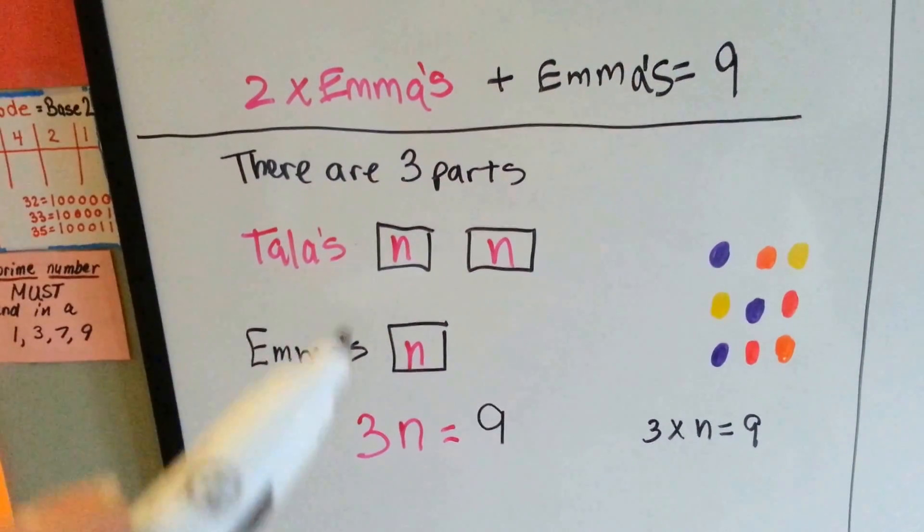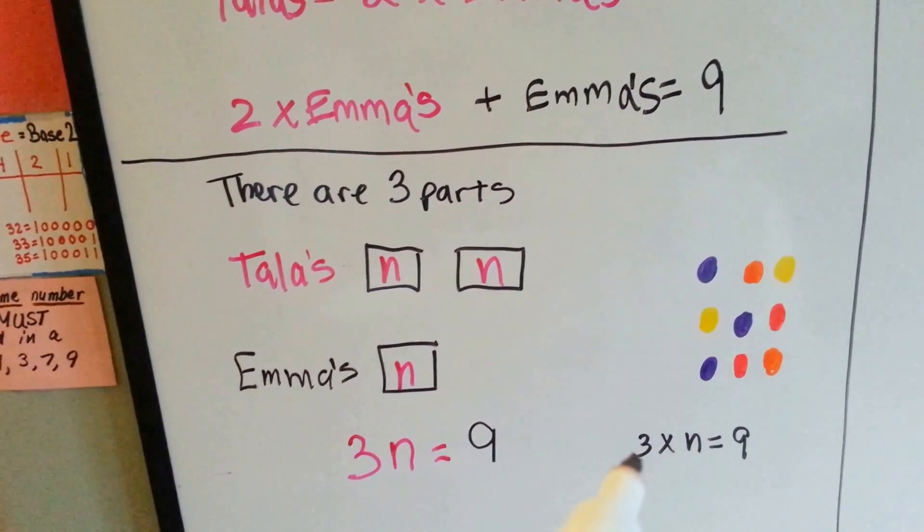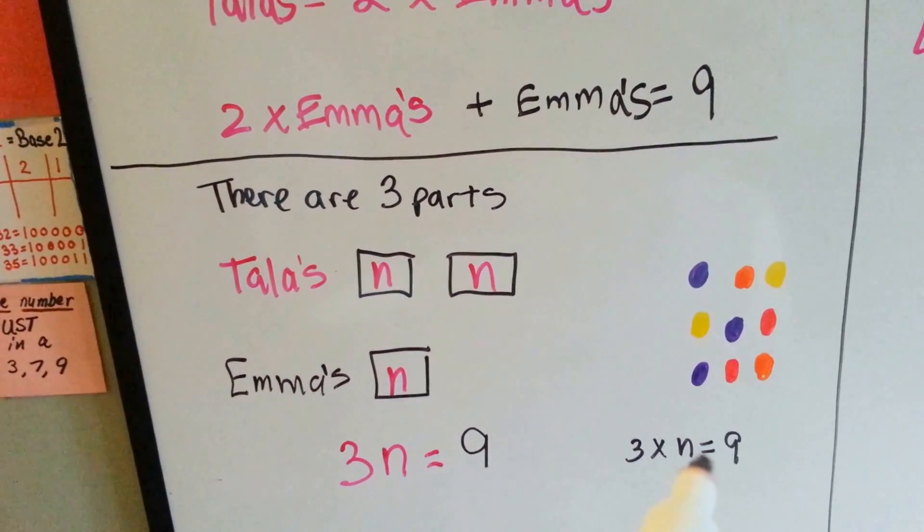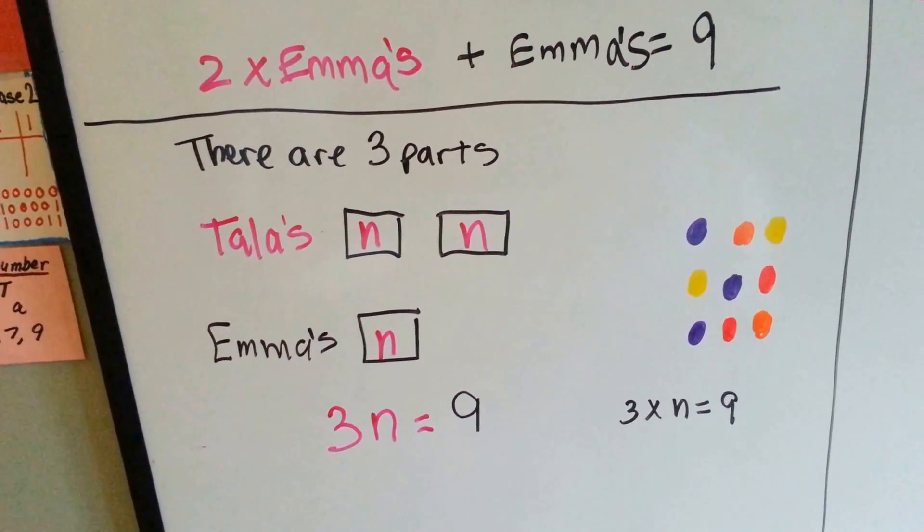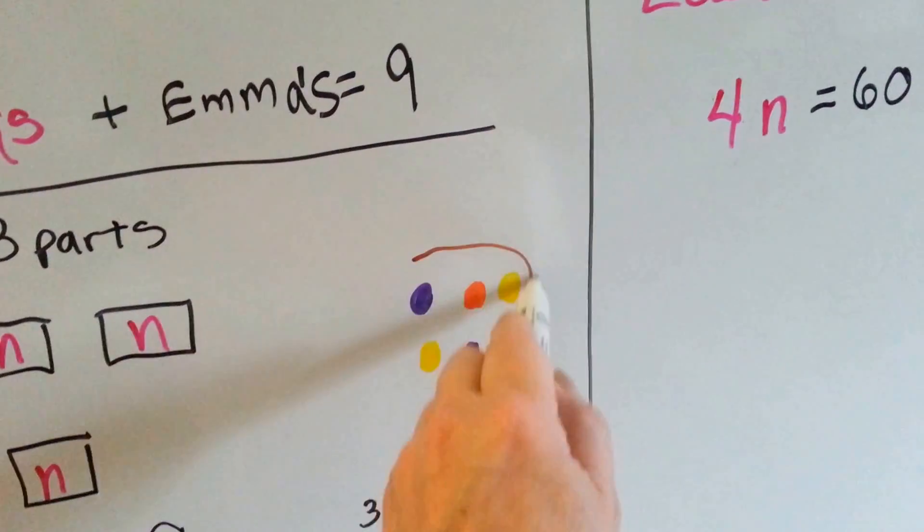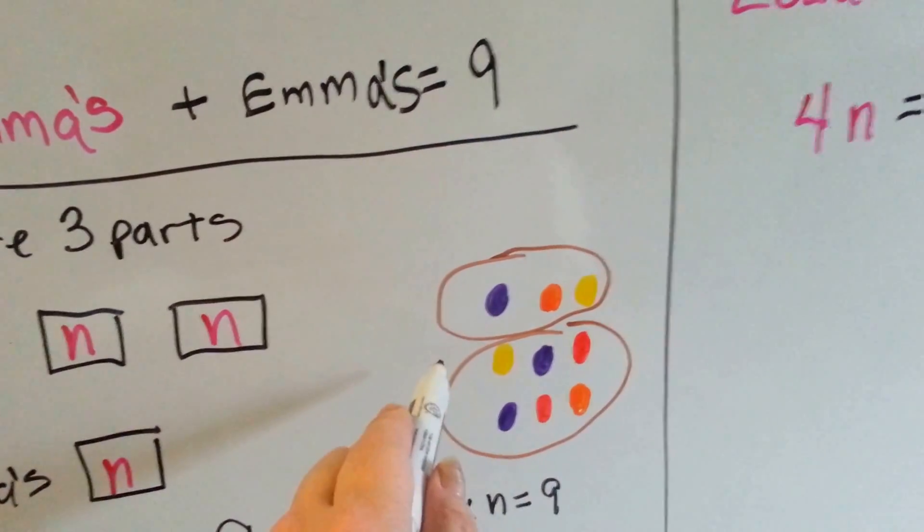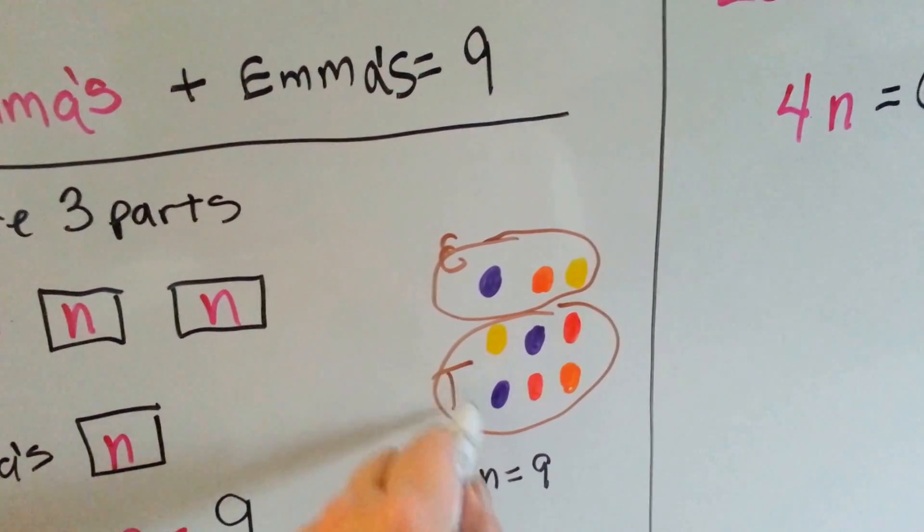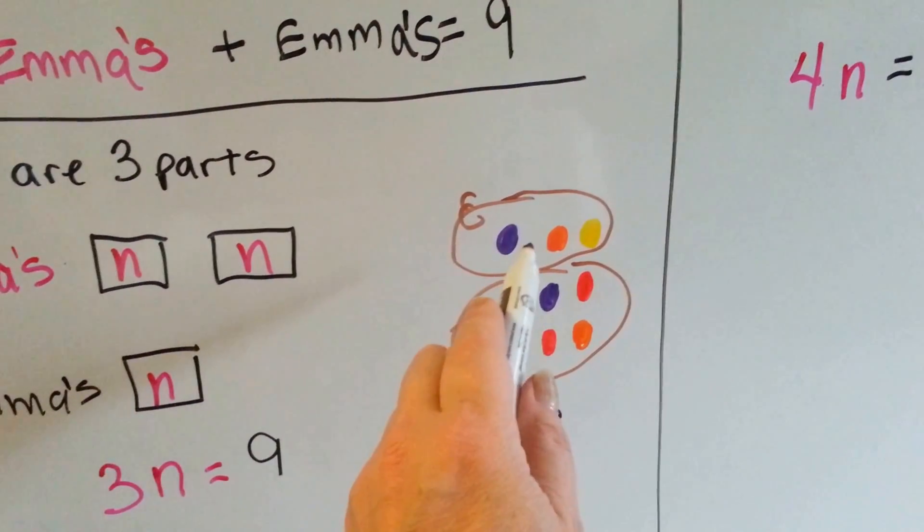we would get three n's are equal to nine. Three times n equals nine. Three times what equals nine? Three times three. So this would be Emma's, and this would be Tala's. See? Tala's got two times more than Emma.